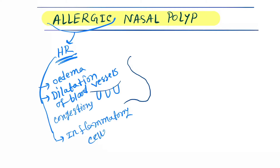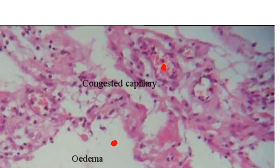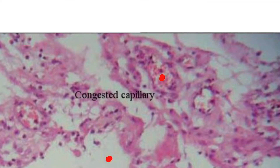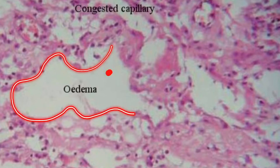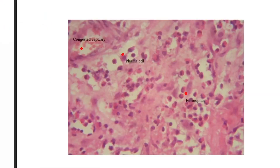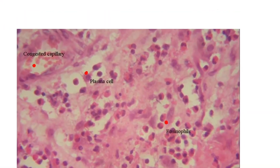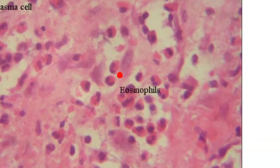Let's see the histological pictures. In the first picture, you can see the congested capillaries and edema, that is deposition of extracellular fluid. In the second histological picture, you can see plasma cells forming antibodies due to the hypersensitivity reaction, and here are the eosinophils — the inflammatory cells.